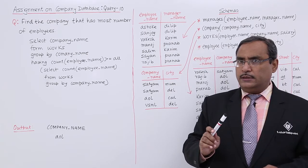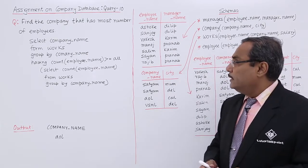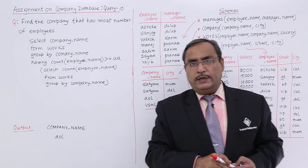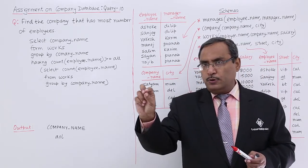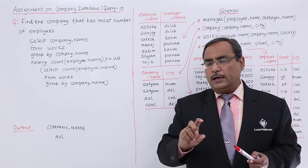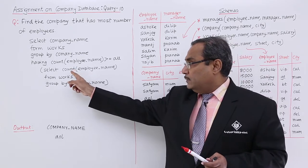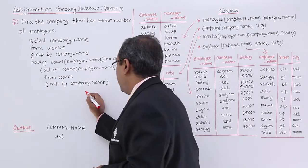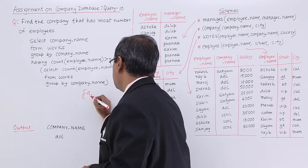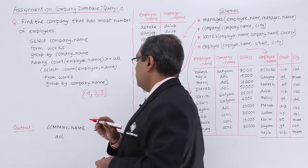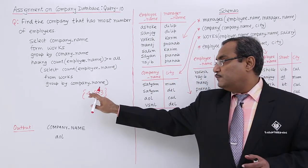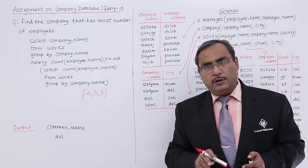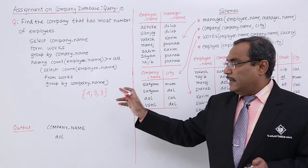Let me discuss the inner query first: SELECT COUNT(employee_name) FROM works GROUP BY company_name. Here AOL will form one group, VSNL another group, and Shottam another group. We are picking up the count of employee names. So this inner query produces a set of values: 4, 3, 3 — that is 4 employees for AOL and 3 employees each for Shottam and VSNL.